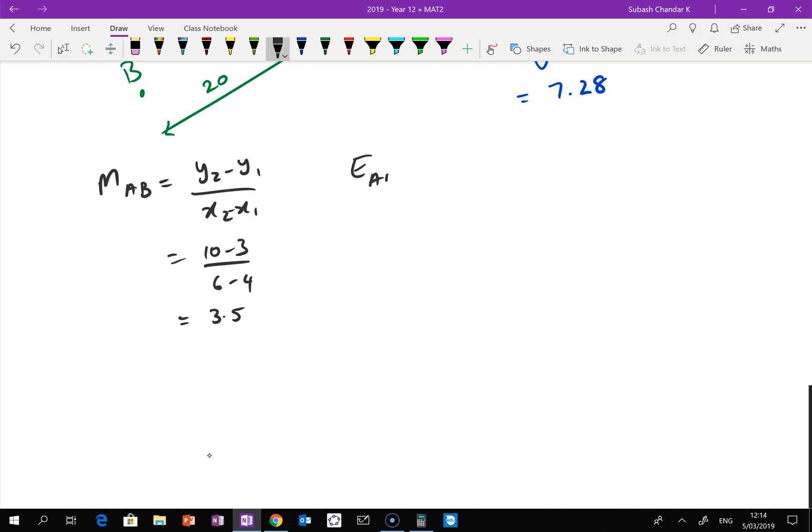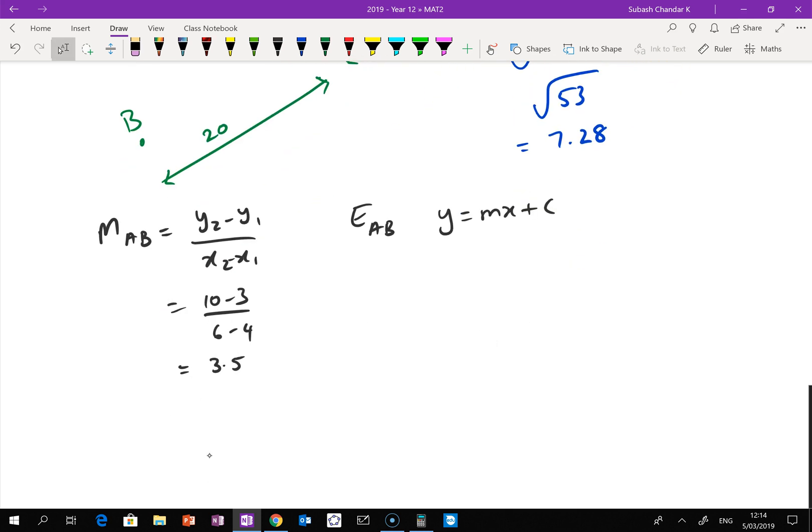So the equation of AB I'm going to get y equals mx plus c. I'm going to use the point (4,3). So which means I'm going to get 3 equals 3.5 times 4 plus c. 3 equals 14 plus c. And c equals 3 minus 14, so it's negative 11. So the equation of AB is y equals 3.5x minus 11.